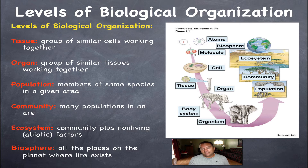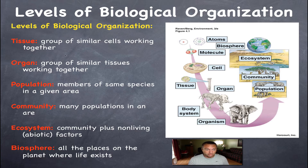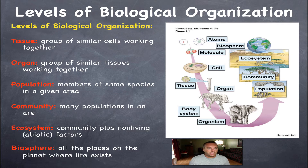Put a bunch of molecules together — specifically those biomolecules: carbohydrates, lipids, proteins, and nucleic acids — and that will lead to a cell. In this case we have a eukaryotic cell; 'eu' means true, and true cells have a nucleus. A bunch of cells working together is a tissue — a group of similar cells working on a very similar function. An organ, our next layer, is a group of similar tissues working together on a common function. This bone here would be an organ.